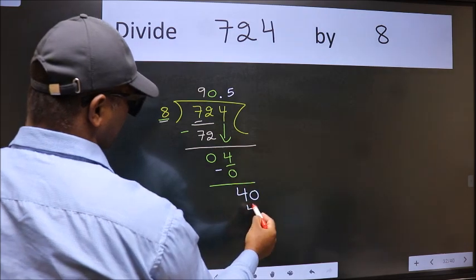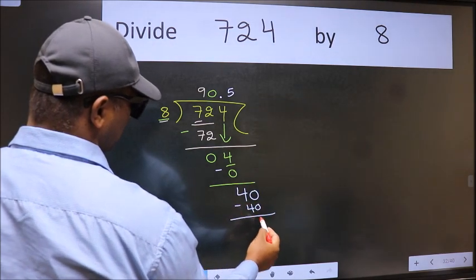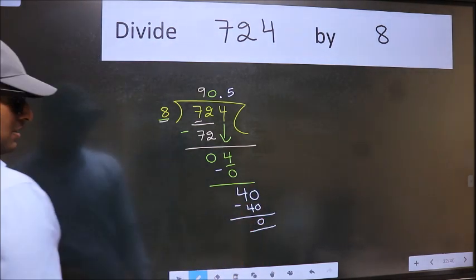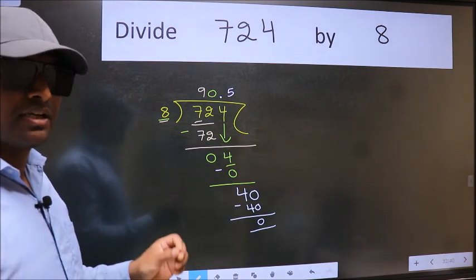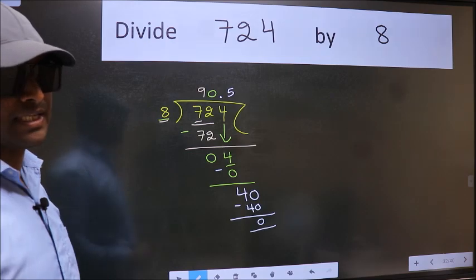8 fives is 40. Now we subtract. We get 0. Did you understand where the mistake happens? You should not do that mistake.